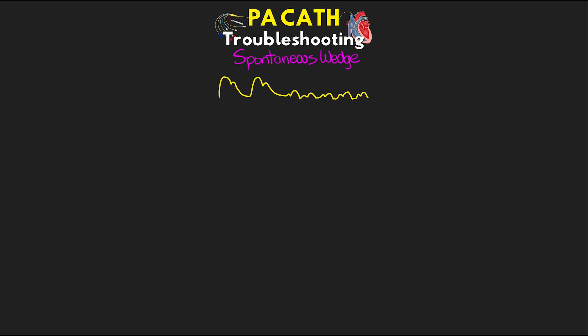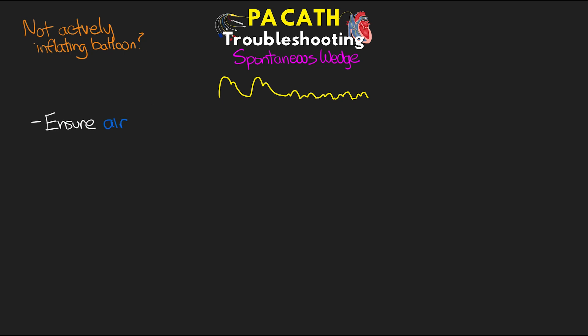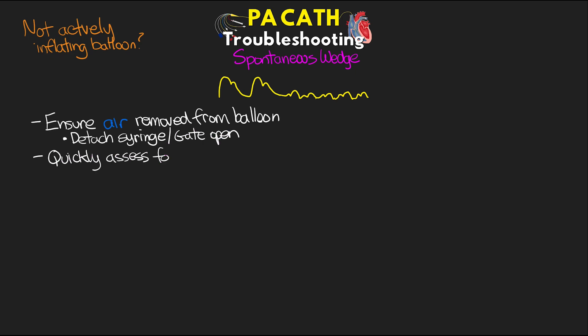Next is if we have a spontaneously wedged waveform. If you suddenly notice a wedge waveform and you're not actively inflating the balloon, then first you want to ensure that air is removed from the balloon — detach the syringe and make sure that the gate is open. Then quickly, you want to assess for any causes of a dampened waveform, which I'll cover in just a minute.